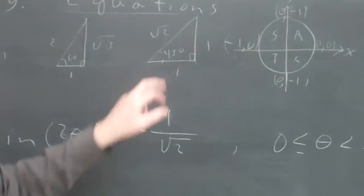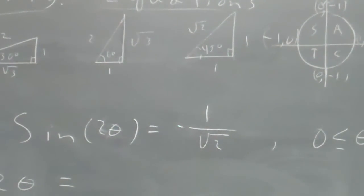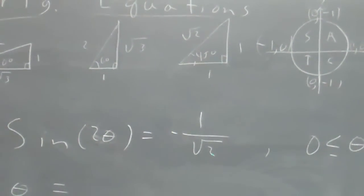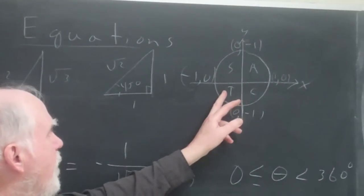And so obviously it's got to be some multiple of 45 degrees, and I'm going to say, and since it's negative, it has to be in the second quadrant or the third quadrant.